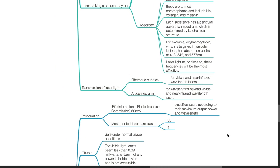Transmission of laser light may be via fiber optic bundles or via an articulated arm. Fiber optic bundles are used for visible and near infrared wavelength lasers. Articulated arm is used for wavelengths beyond visible and near infrared wavelength lasers.